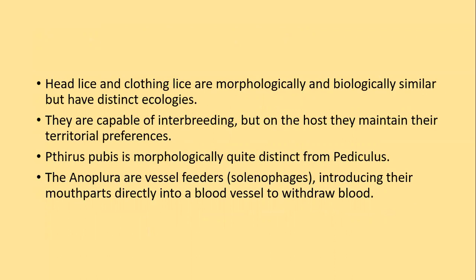Head lice and clothing lice are morphologically and biologically similar but have distinct ecologies — one lives on the scalp and the other on clothes. They are capable of interbreeding, but on the host they maintain their territorial preferences. Pthirus pubis is morphologically quite distinct from Pediculus. Anopleura are vessel feeders, also known as solenophages, which introduce their mouthparts directly into blood vessels to withdraw blood.